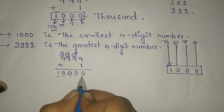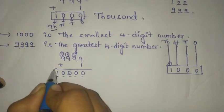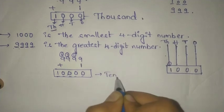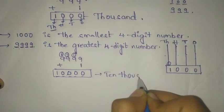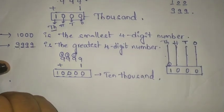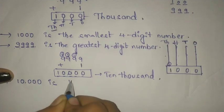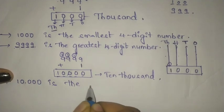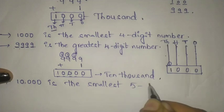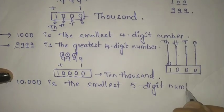This is a five digit number — 1, 2, 3, 4, 5. We read it as 10,000. This 10,000 is the smallest five digit number.